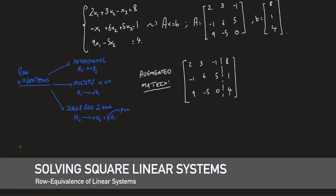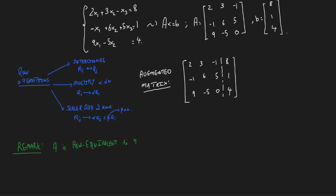One remark on row operations: we say that A is row equivalent to B if B is obtained from A by a sequence of elementary row operations. So if I grab matrix A and perform a sequence of those operations — multiplying one row by a non-zero scalar, interchanging two rows, scaling and adding rows — and obtain another augmented matrix B, then A and B are row equivalent.